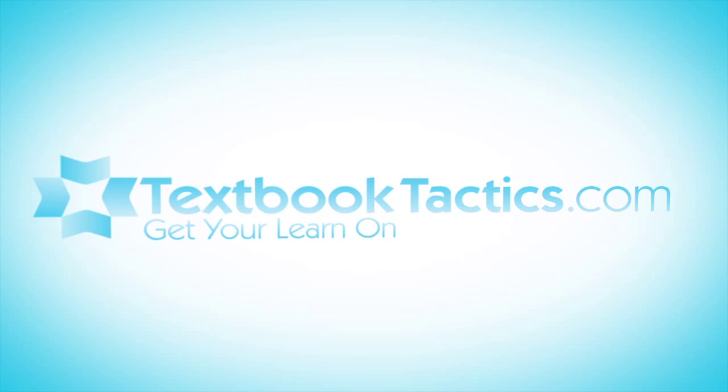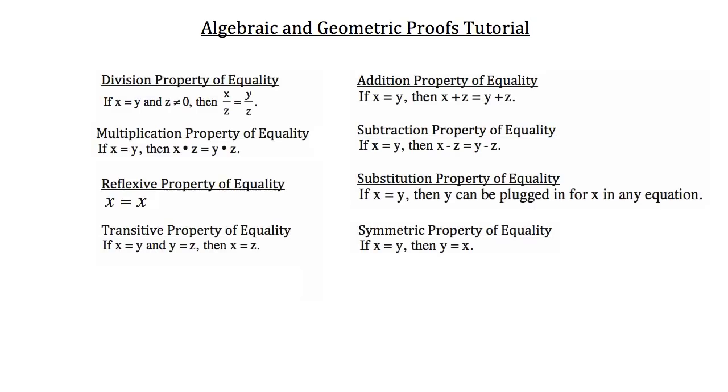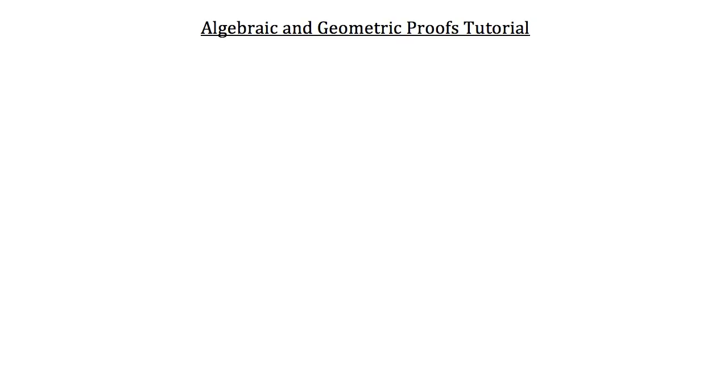This is the algebraic and geometric proofs tutorial. In this tutorial we're going to talk about eight different properties of equality. You may have seen some of these properties in Algebra 1, but we're going to go over them and their implications for geometry. Rather than study all eight at once, we're going to do them four at a time.